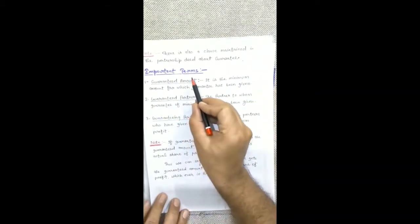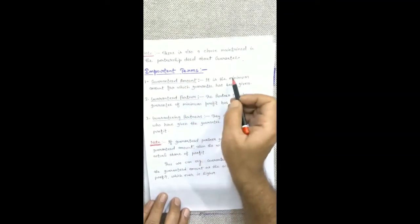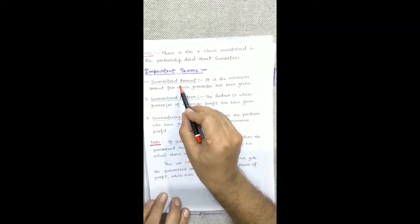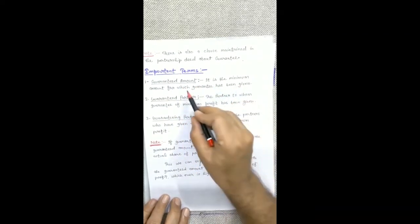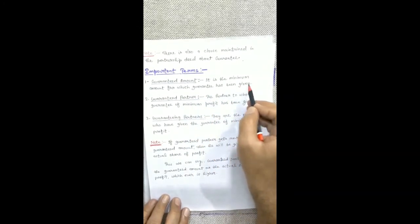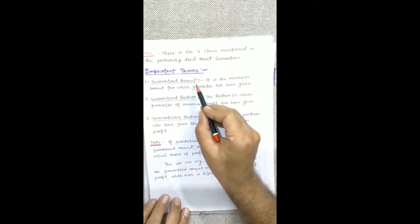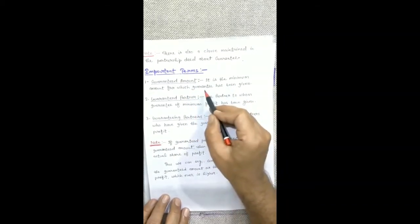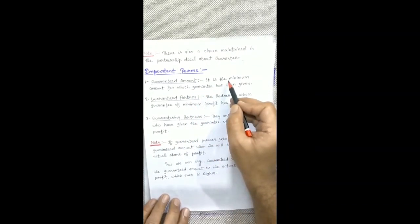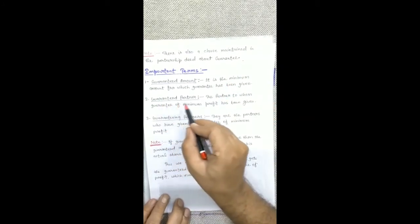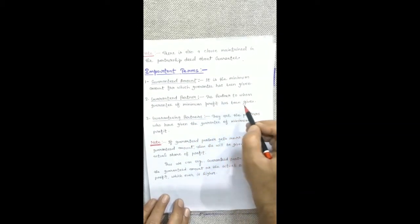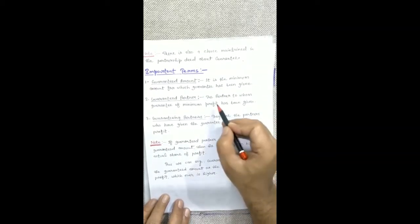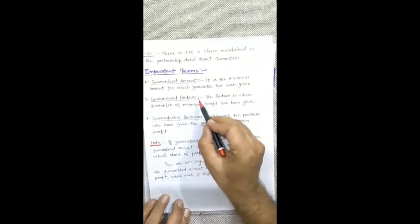Now there are some terminologies which will be used in questions. The first is 'guaranteed amount' — it is the minimum amount for which the guarantee has been given; the minimum amount that the guaranteed partner will receive. The second is 'guaranteed partner' — the partner to whom the guarantee of minimum profit has been given is called the guaranteed partner.